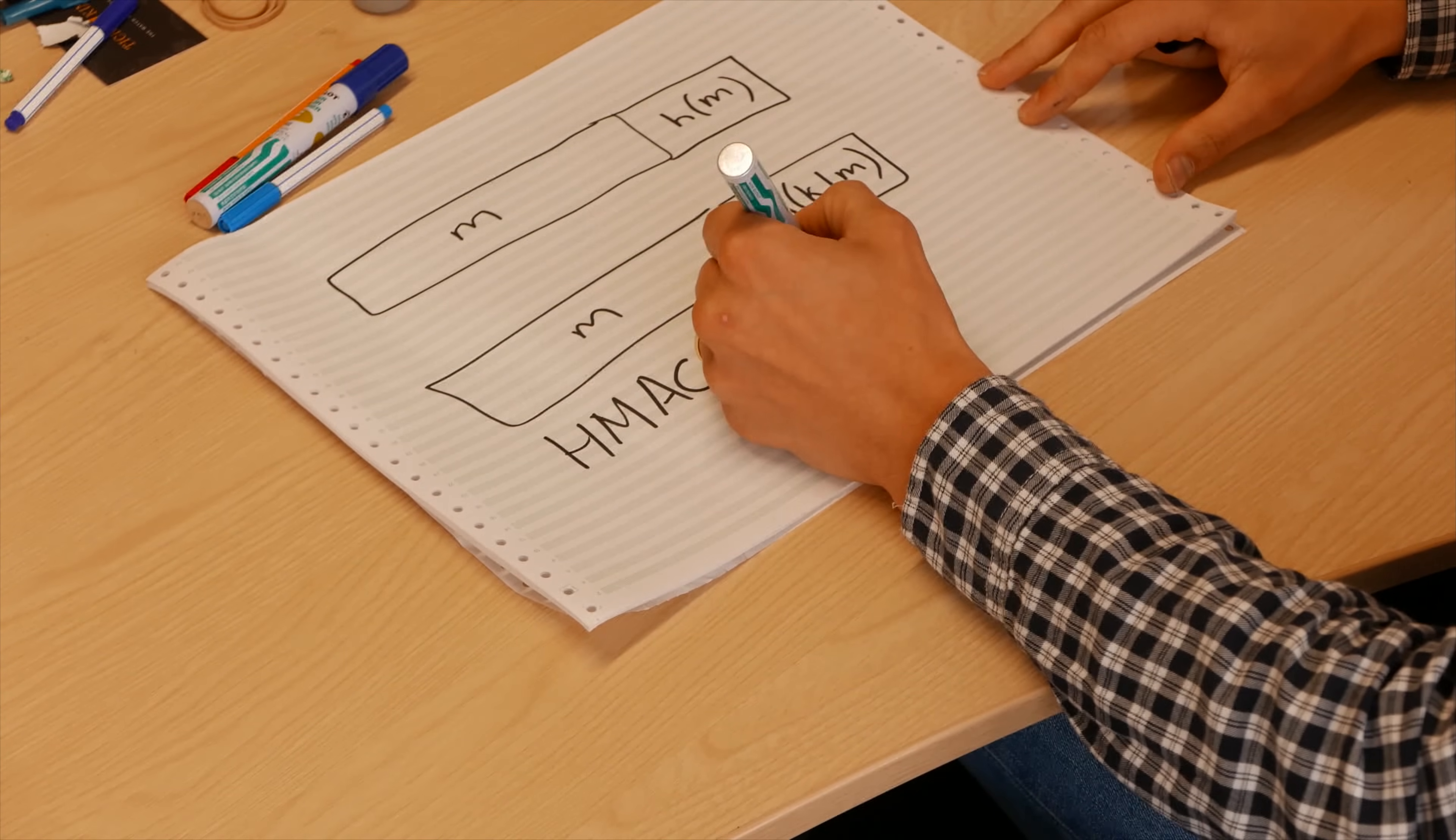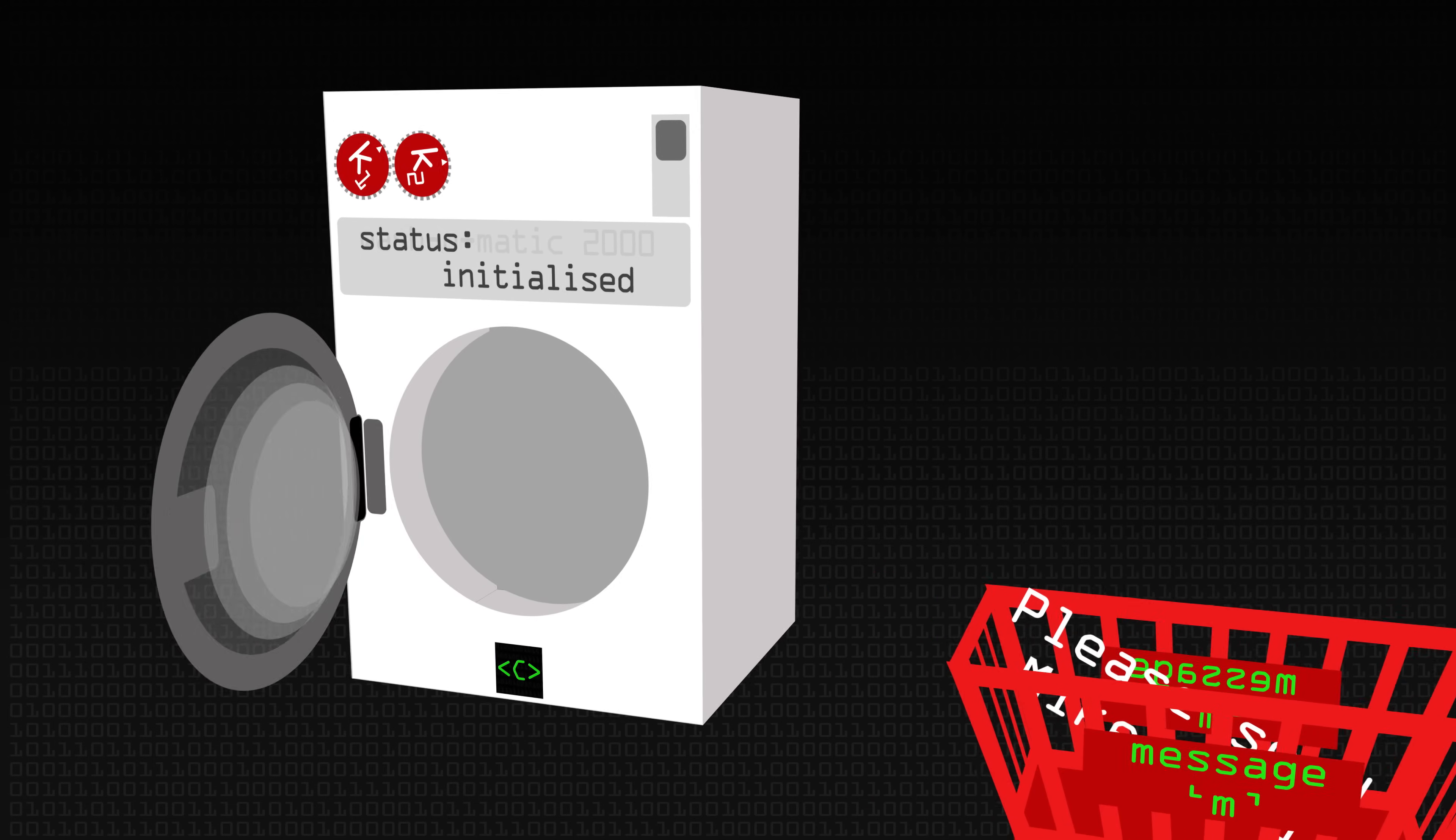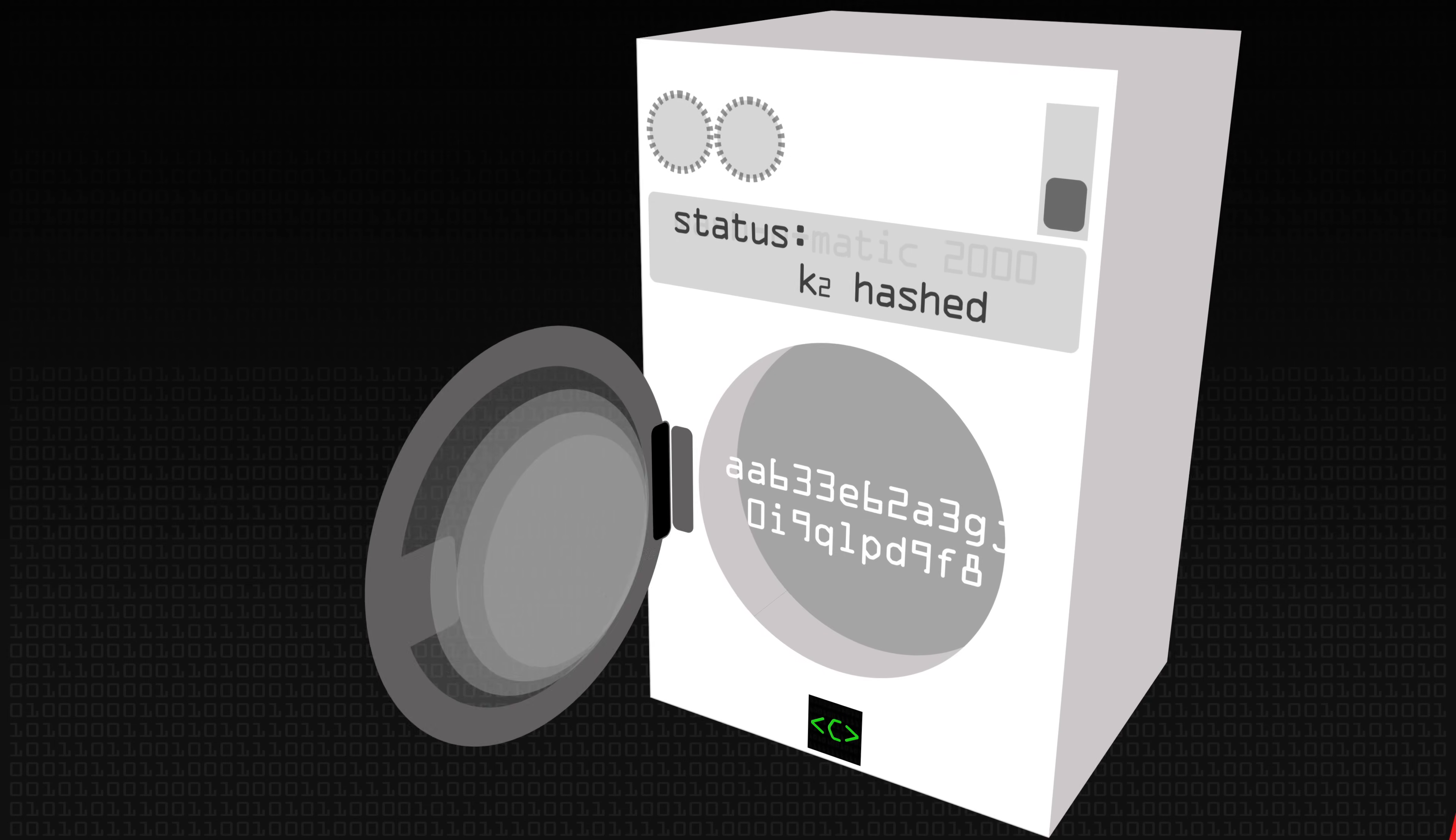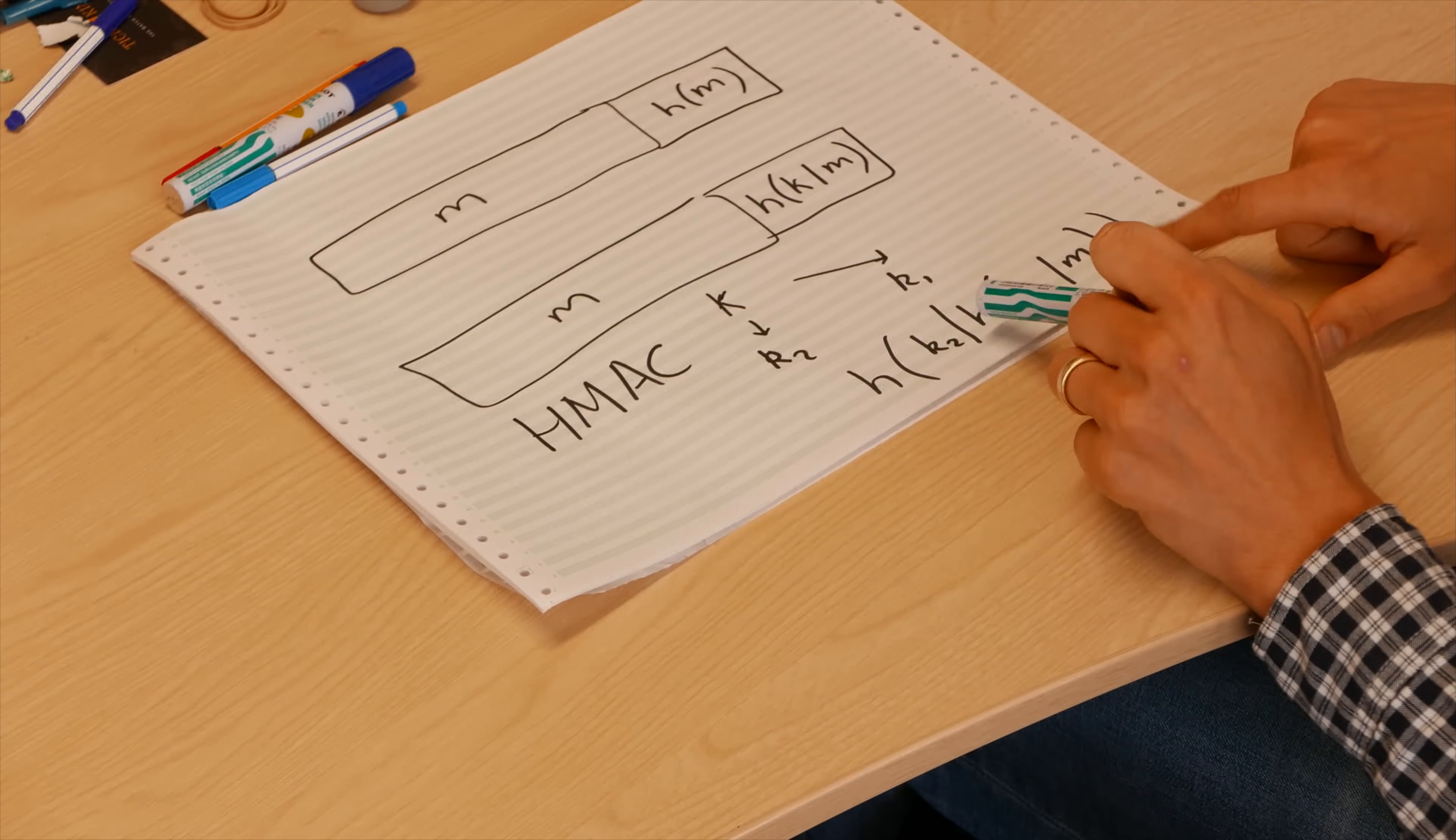So what we do is we take our key and we use it to derive two sub-keys—K1 and K2. So this is K2 and this is K1. And then we calculate our hash of K1 with our message, and then we append that to K2, and we hash it again. Cue nice animation. But the idea is you can't perform the same length extension attack on this message.